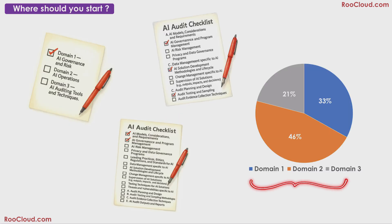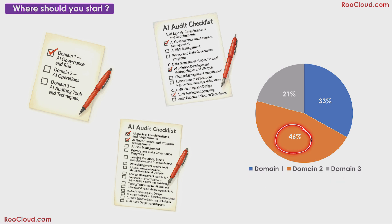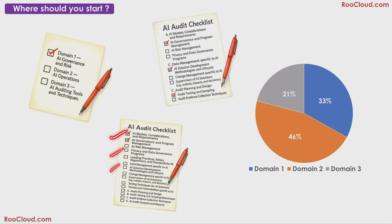Now there are three domains. Where should you start your prep? Should you go 1, 2, 3, or should you start with domain 2 which accounts for almost half of the exam, or with domain 3 which is the smallest? It actually doesn't matter that much. You can go 1, 2, 3, or you can also go as per your familiarity with the topics. That is, if you are already familiar with the topics under domain 2, then start with domain 2 and complete it before moving on to 1 or 3.